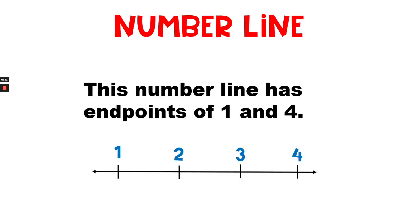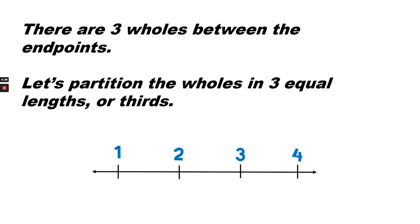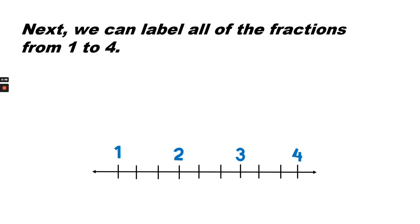This number line has endpoints of one and four. There are three wholes between the endpoints. Let's partition the wholes into three equal lengths, or thirds. Next we can label all of the fractions from one to four.